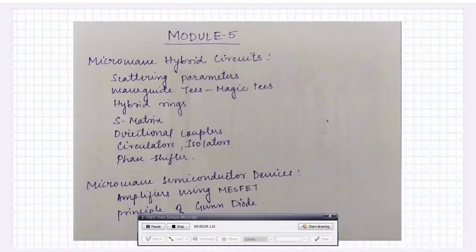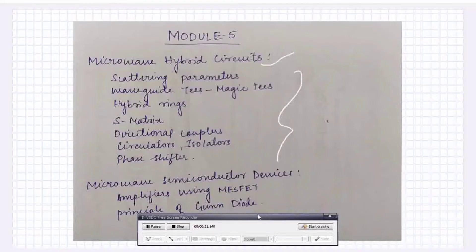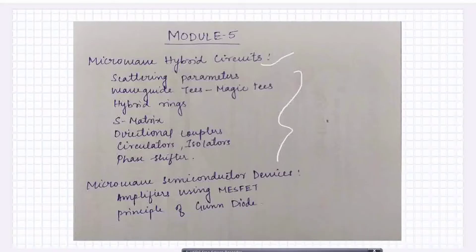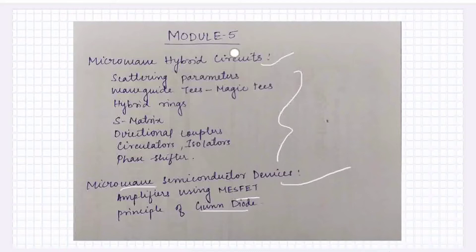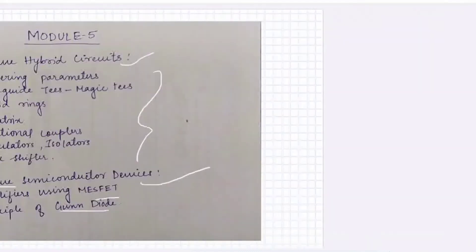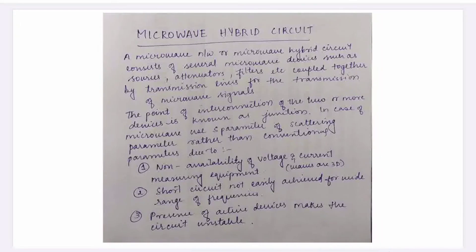Now, what we will do in module 5: we will set up microwave hybrid circuits, then we will set up some parameters, and that is microwave semiconductor devices. This is the principle of amplifiers using MOSFET. Now let's start the microwave hybrid circuit.